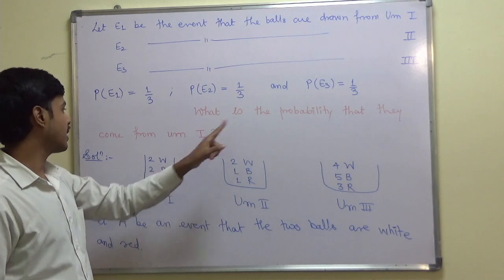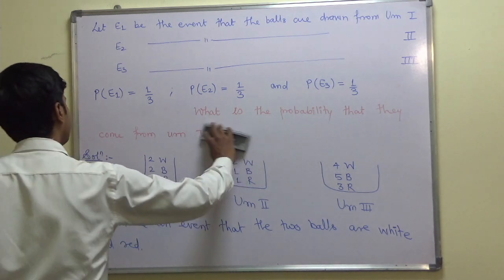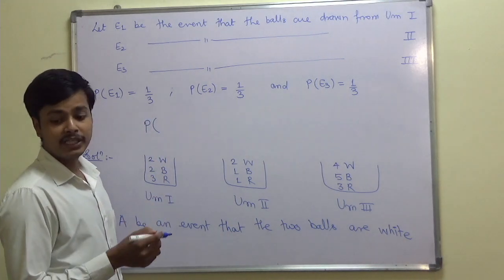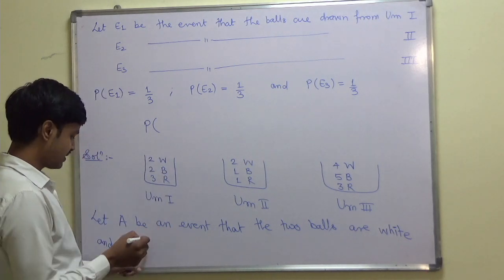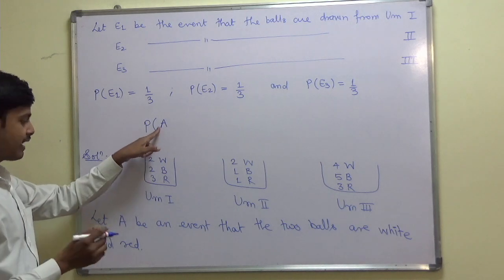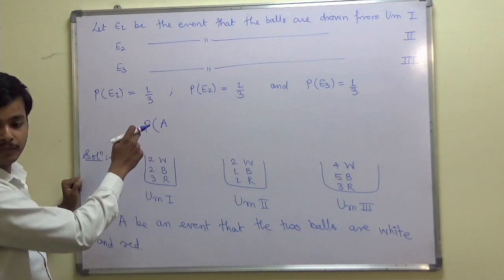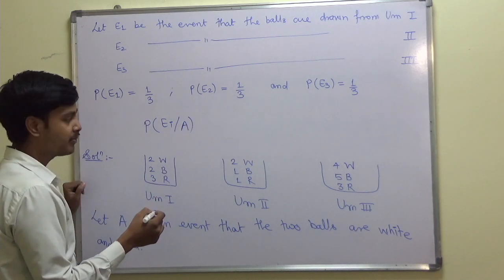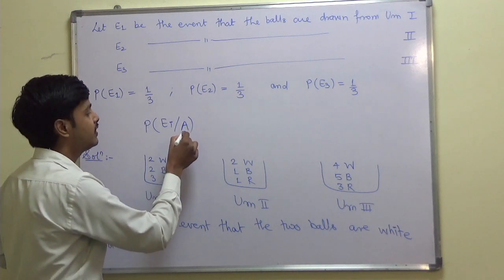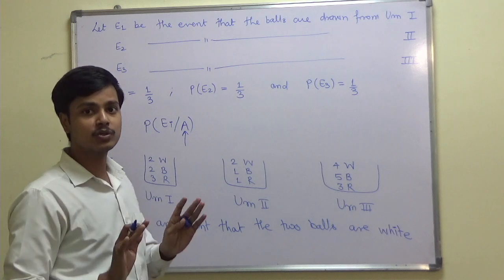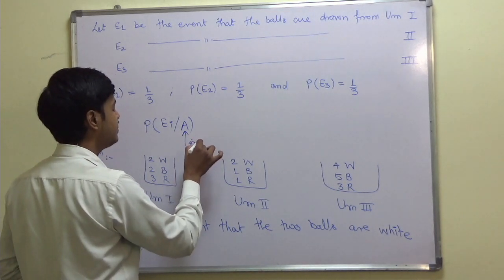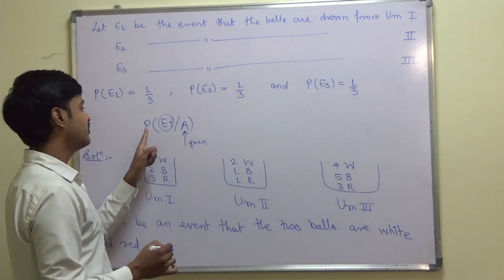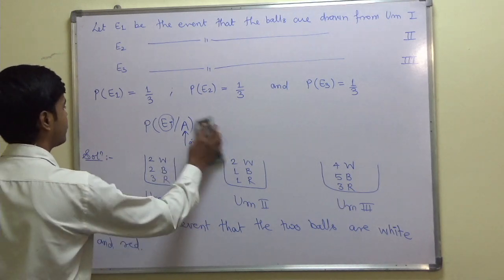What we have to find out is the probability that the balls come from urn 1, given that the event A has occurred — meaning two balls were drawn and they were white and red. So we need to find probability of E1 given A. To do this, I will first find the probability of A given E1, using Bayes theorem.